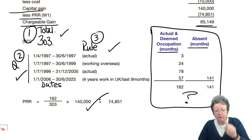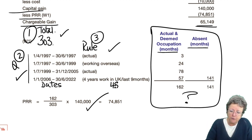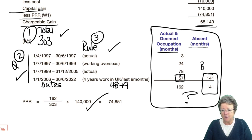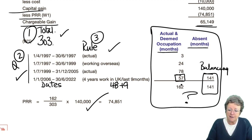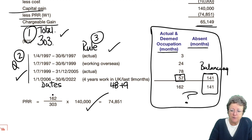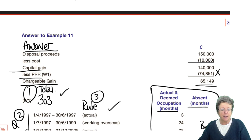So, the first 3 months he was actually there. Then he went to work overseas — that's a deemed occupation that's allowed. Then he moved in — actual. Then he worked up to 4 years in the UK, which is 48 months, plus the last 9 months — so that's 48 plus 9. That means 141 of those months is the balancing figure on which he must pay tax. So 162 divided by 303 (the total) times the gain gives us the PRR of £74,851. That goes in, giving us the chargeable gain.